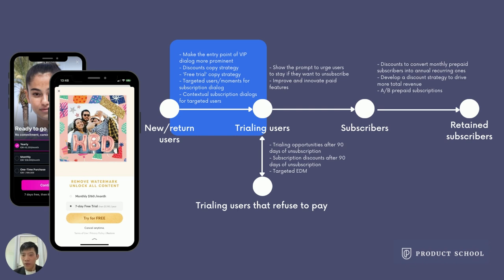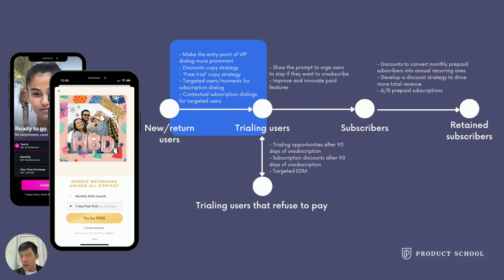We can think based on conversions. The first one is about trial rate. There are two moments for trial rate: one is discoverability — when and where in the product users see the sub dialogue — the other is what users see in the sub dialogue. You can always experiment on the entry points of the sub dialogue. For example, does it improve revenue by putting the entry point at a home button, or is revenue the same if the entry point is only under the settings page? Different products may have different results — it's always worth experimenting.